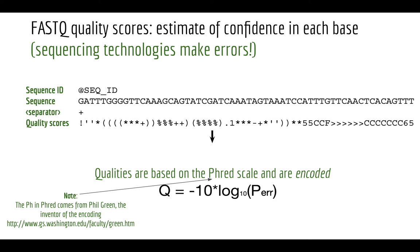If the probability of error is 0.01 (1 in 100), then Q = -10 × log10(0.01) = -10 × (-2) = 20. Each jump of 10 in the quality score reflects an order of magnitude increase in confidence — an order of magnitude lower probability of error. If the probability is 1 in 10,000, Q = -10 × (-4) = 40. A rule of thumb in sequencing is a quality score of 30 or more — a probability of error of 1 in 1,000 — as the threshold for a reliable base call.